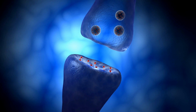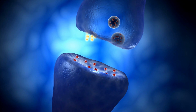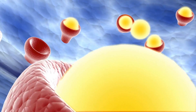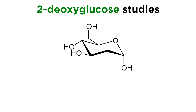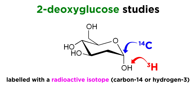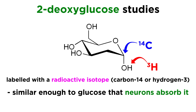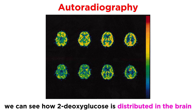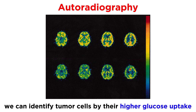The brain can also be manipulated chemically by administering drugs which have an impact on the levels of certain neurotransmitters. We can then measure the chemical activity of the brain by a number of methods. One method involves using a molecule called 2-deoxyglucose that has been labeled with a radioactive isotope. This is similar enough to glucose that neurons will absorb it, but because of the missing hydroxyl, it can't be metabolized, so it remains in the cell intact. Upon performing autoradiography, we can see how the compound is distributed, and identify things like tumor cells, which will have a higher glucose uptake.